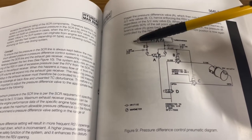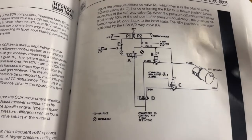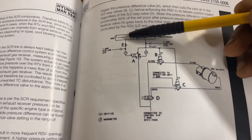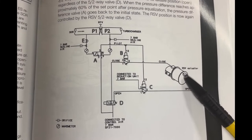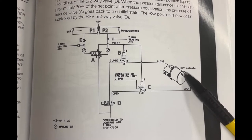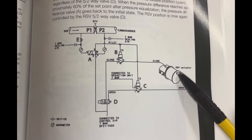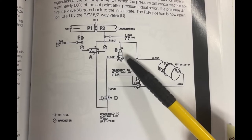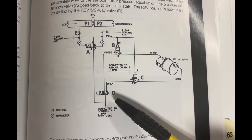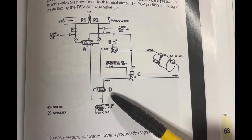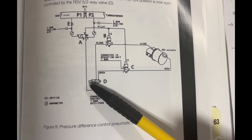When excess pressure builds up in the SCR lines, the RSV will open. The RSV is the reactor sealing valve. This RSV contains three valves: two 3/2-way valves B and C, and one 5/2-way valve D. This 5/2-way valve D contains a solenoid valve which gets a signal from the MOP for open and close.